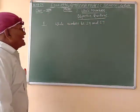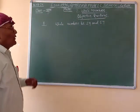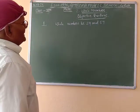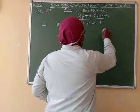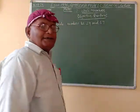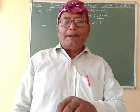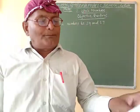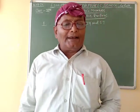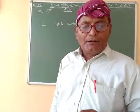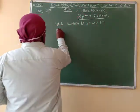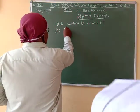You can count how many numbers are between 29 and 57. After counting, you will get that there are 27 whole numbers between 29 and 57. The correct answer is 27.